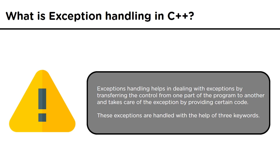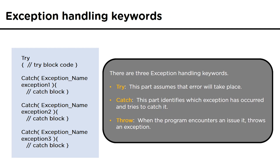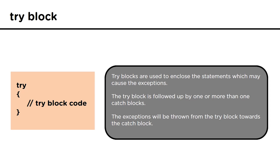Exceptions are handled with the help of three exception handling keywords: try, catch, and throw. As we can see in the example, there is a try block followed by catch blocks, and each catch block contains the name of the exception. Inside the try block, those statements are enclosed which may cause the exception. Each try block is followed by one or more catch blocks, and the try block throws an exception which is caught by the catch block.